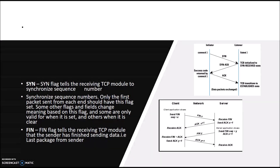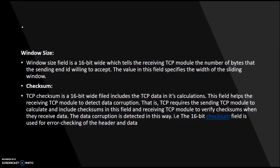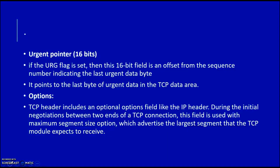After the flags, next is window size. Window size is used to tell whether the required space is available on the receiver side, to avoid congestion and retransmission. Then checksum — checksum is a mathematical method used to check whether the packet was correctly received at the destination end. It is computed at both the source end and the destination end. The urgent pointer points to the last byte of urgent data in the TCP data area.